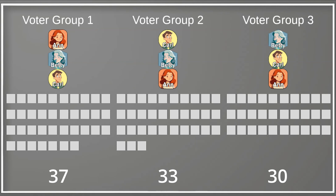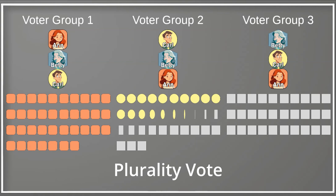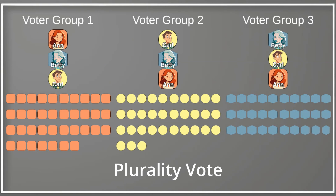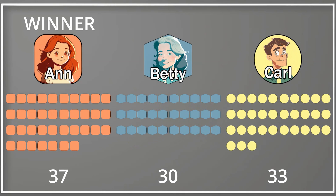Let's look at our first voting rule set: a plurality vote. A plurality vote is a fancy name for the voting rules most of us think of when we say 'let's hold a vote.' Everybody votes for their favorite candidate, and the candidate with the most votes wins. Voter group one votes for Anne, voter group two votes for Carl, and voter group three votes for Betty. We count up all the votes, see that Anne has the most votes at 37, and Anne is declared the winner.